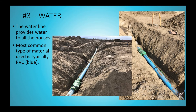Number three is the water. The water line provides water to all the houses in your community. Just like the sewer, the most common type of material used is typically PVC. Other materials could be VCP or ductile iron, but again the most common material is PVC — and you can see here that the color is blue, unlike the sewer which was green.